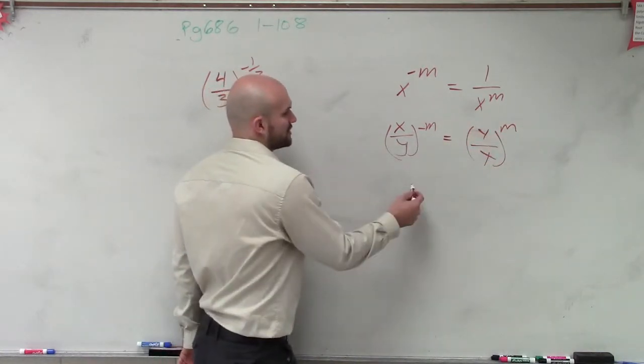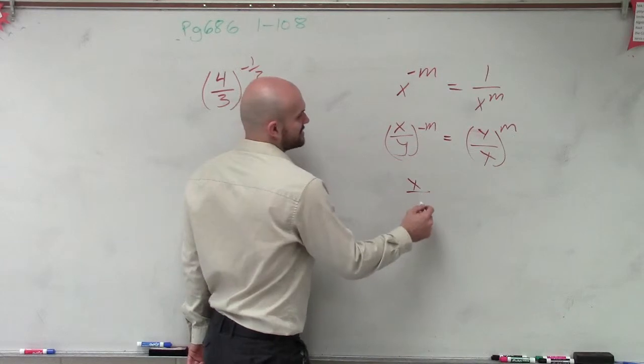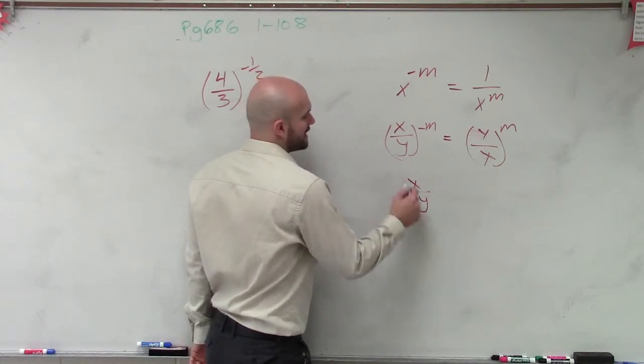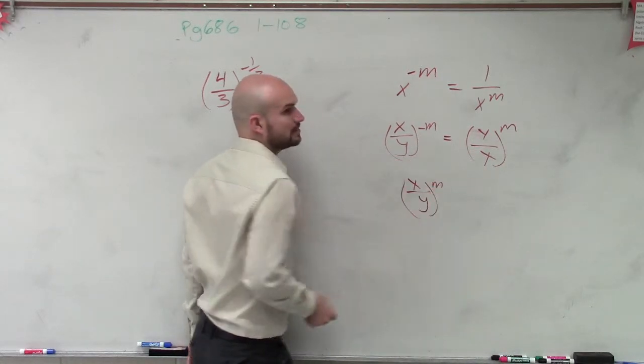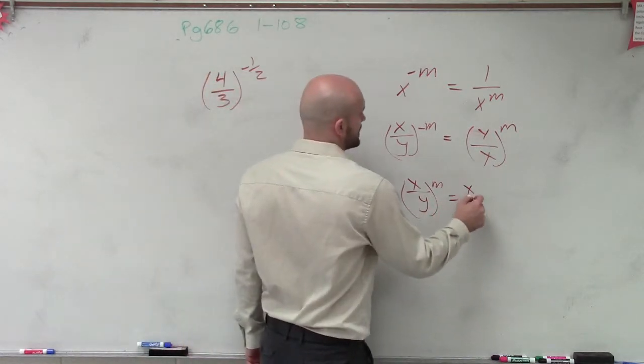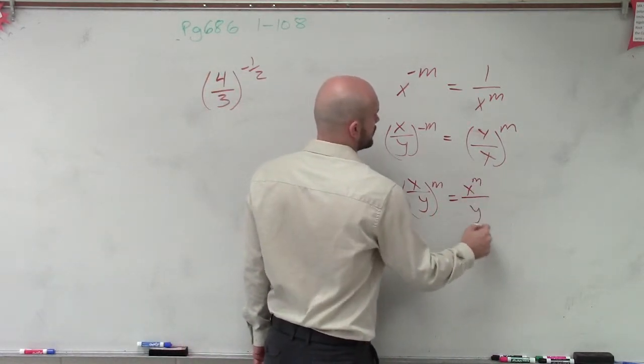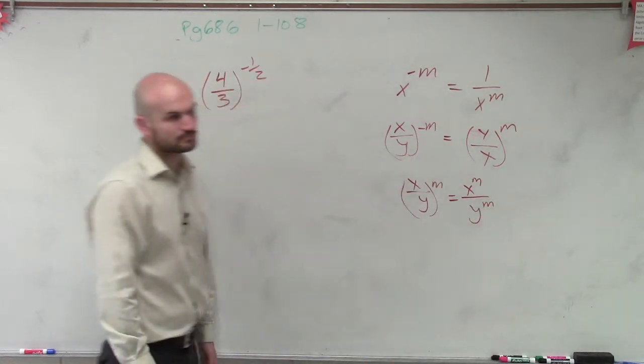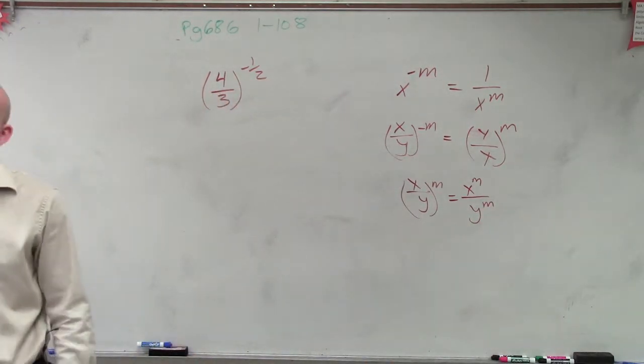Now, the other rule that we need to make sure we understand is, if I have x over y to the m, by using the power of quotient property, we know that that equals x to the m over y to the m. Right? Okay.